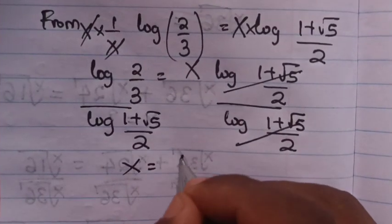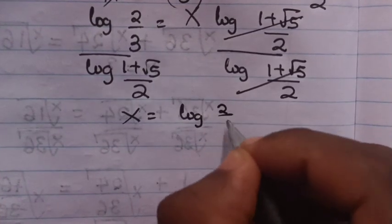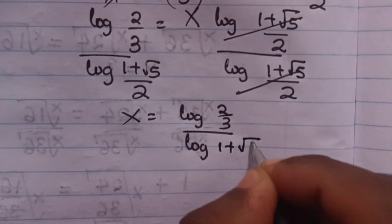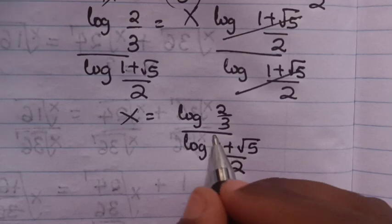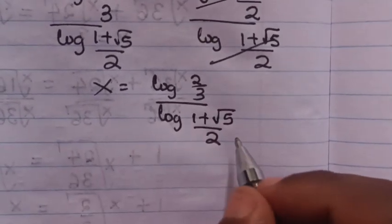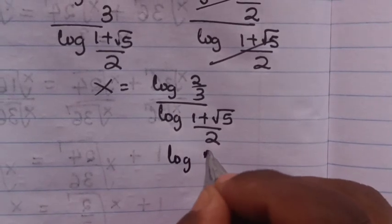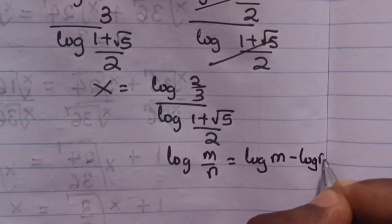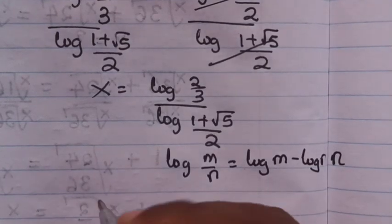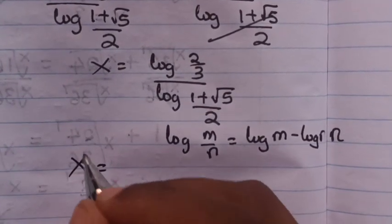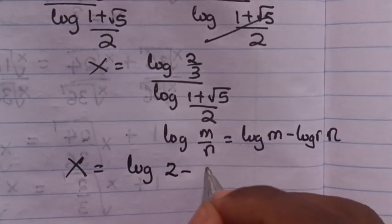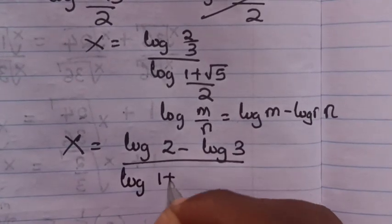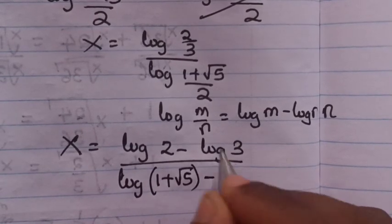So x will be equal to log(2/3) divided by log of (1 plus square root of 5) over 2. We apply the rule that log(m/n) equals log m minus log n, so x equals (log 2 minus log 3) divided by (log(1 plus root 5) minus log 2).